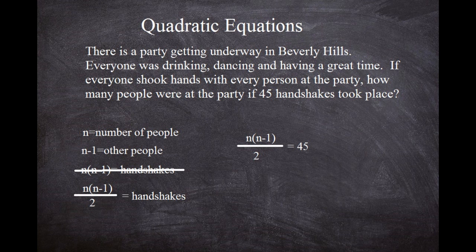So we want to be left with n times (n minus one) on the left side, and 45 times two — which is 90 — on the right side. Now let's expand the numerator: n times n is n squared, and negative one times n is negative n. So we get n squared minus n equals 90.